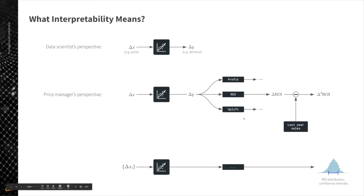This can be done by building a pipeline with forecasting models attached to econometric models and running historical data — for example, previous year's data — through this pipeline to generate empirical distributions of business KPIs. This typically works well and provides good insight into what uncertainty ranges look like, and is generally very explainable to business users.